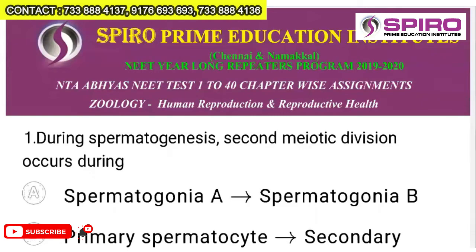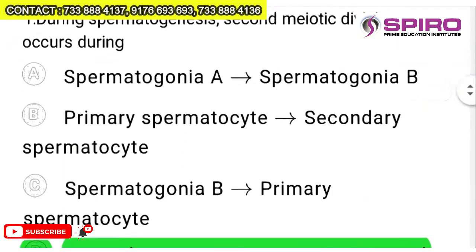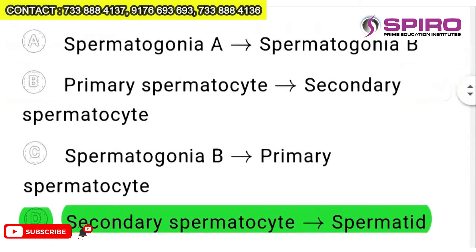The first question: during spermatogenesis, second meiotic division occurs during which stage? A primary spermatocyte is transformed into two secondary spermatocytes during meiosis 1. These cells are then converted into haploid spermatids during meiosis 2. So the second meiotic division is rapid. You can mark option D: secondary spermatocyte to spermatid.